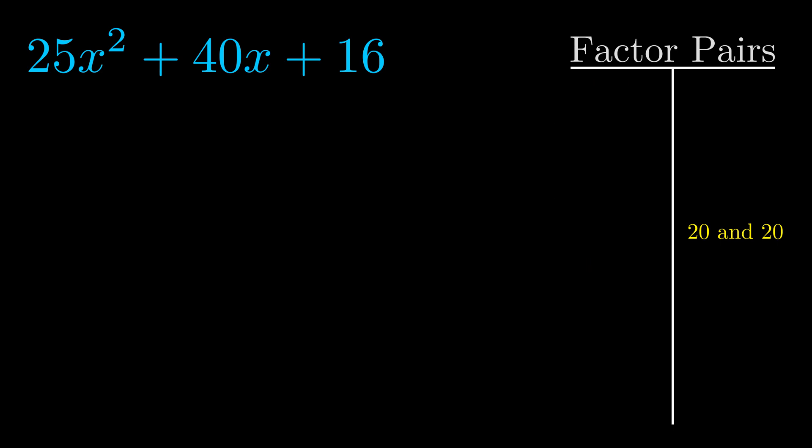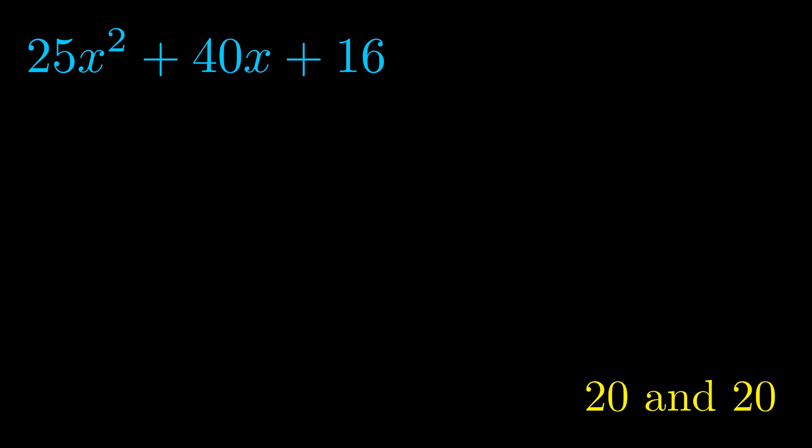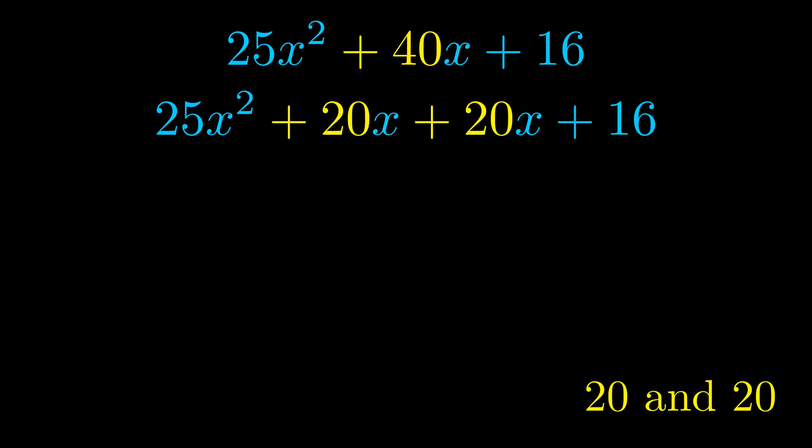Now once we have this factor pair what we want to do is we want to use it to split up the b value. Notice how I'm going to keep my first term and my last term completely unchanged. It is only this b term highlighted in yellow that gets expanded into this correct factor pair.